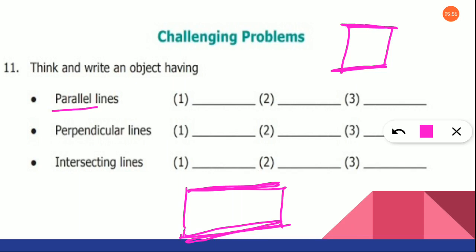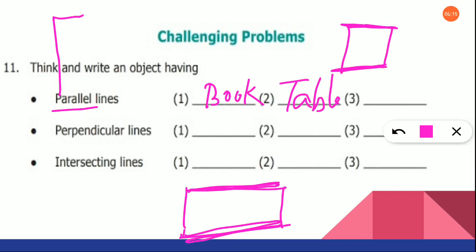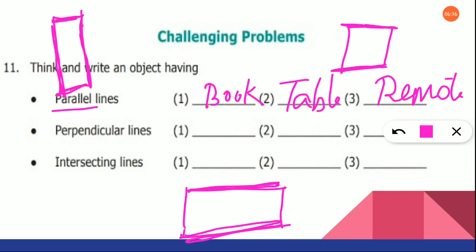So for the first one, it is a book. And the second one, I am going to write it as a table. Think of another object. For example, a remote is near me — it will be like this. Shall we say this part and this part is parallel? Same way this line is parallel to this line. So I am going to write the third one as a remote control.